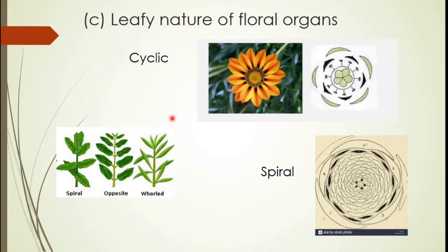The third piece of evidence is the leafy nature of floral organs. This can be seen first in the arrangement of the floral organs, which is similar to that of leaves. Leaf phyllotaxy — or arrangement — can be spiral, opposite, or whorled. Floral organs are usually arranged in a cyclic manner in a circle, as can be seen in a floral diagram. A floral diagram is a representation of a flower showing the number and relative position of the different floral organs. The arrangement may be cyclic or spirally arranged.